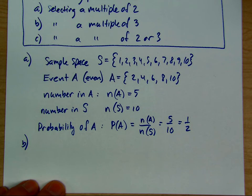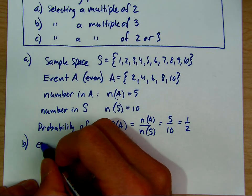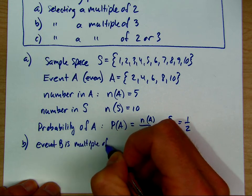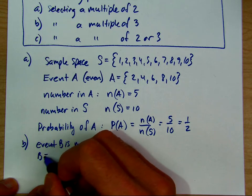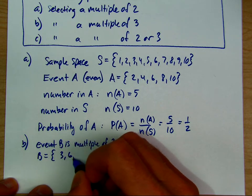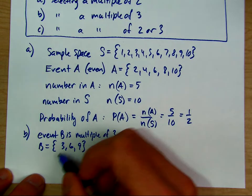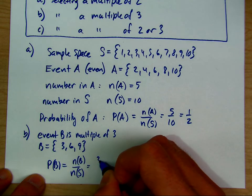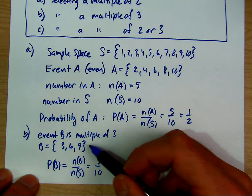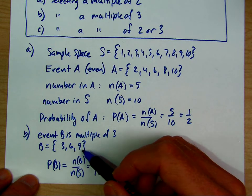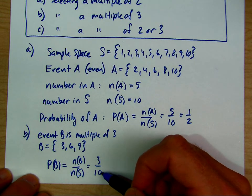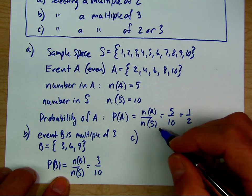Try events B and C using the same notation — pause the video. For event B, we just have to identify the elements: there are three elements out of the possible ten.